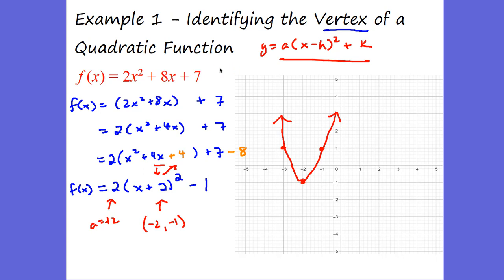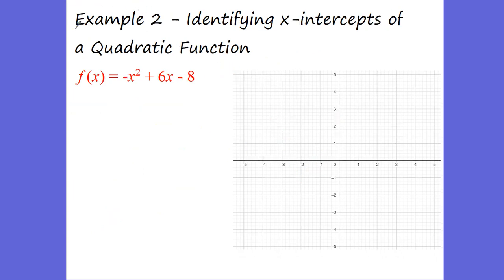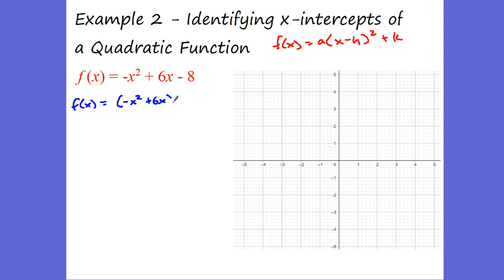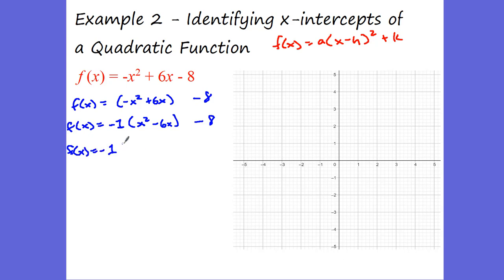That's how we identify the vertex of a quadratic function by completing the square — something you really want to be good at. Now example 2: we want to identify the x-intercepts of a quadratic function. We'll put it into standard form. We group the x values: negative x squared plus 6x, and put negative 8 outside. We factor out negative 1, giving us x squared minus 6x inside, with minus 8 outside.